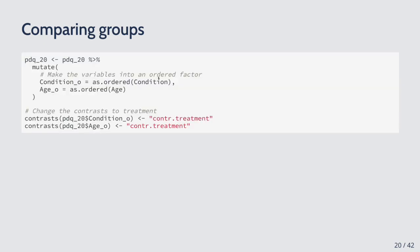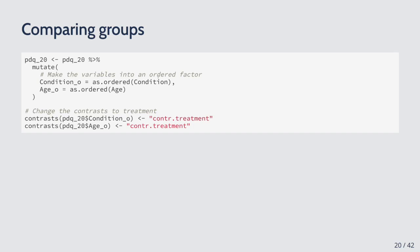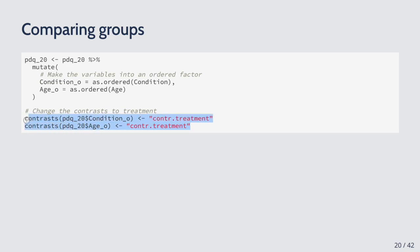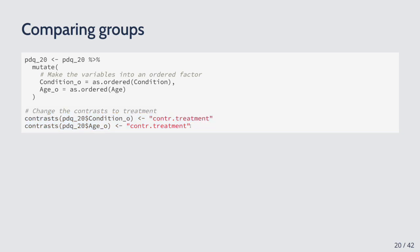You also have to include the factor as a parametric term in the model, not only as the by variable. You'll need a reference smooth without the by variable and a different smooth with the by variable. Concretely: convert condition and age to ordered factors using as.ordered(), then change their contrasts to treatment contrasts. This is an important step — forgetting it makes the parametric effects output look unfamiliar because polynomial terms are used instead.